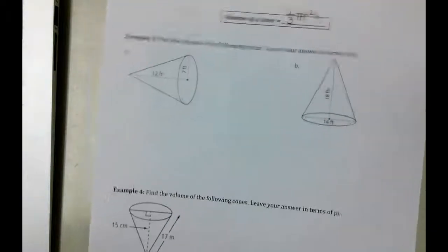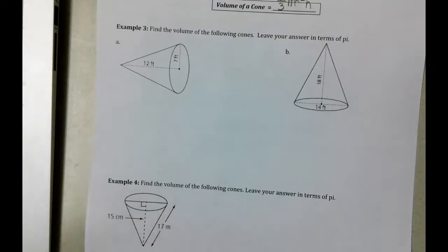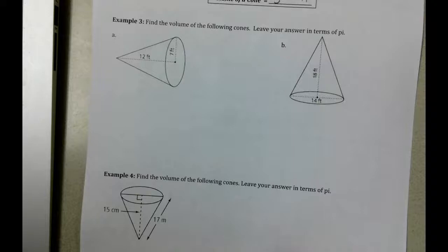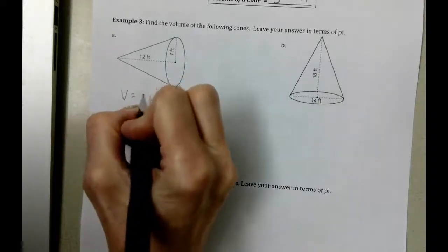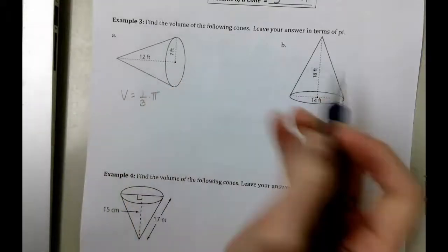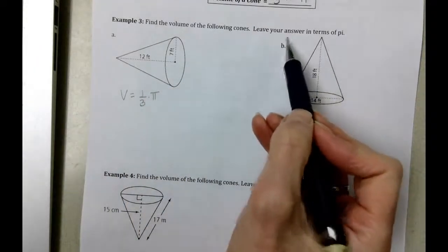When we get down here we're simply going to use our formula in desmos. Our volume is going to be one-third times pi. Notice that the directions say leave our answers in terms of pi.